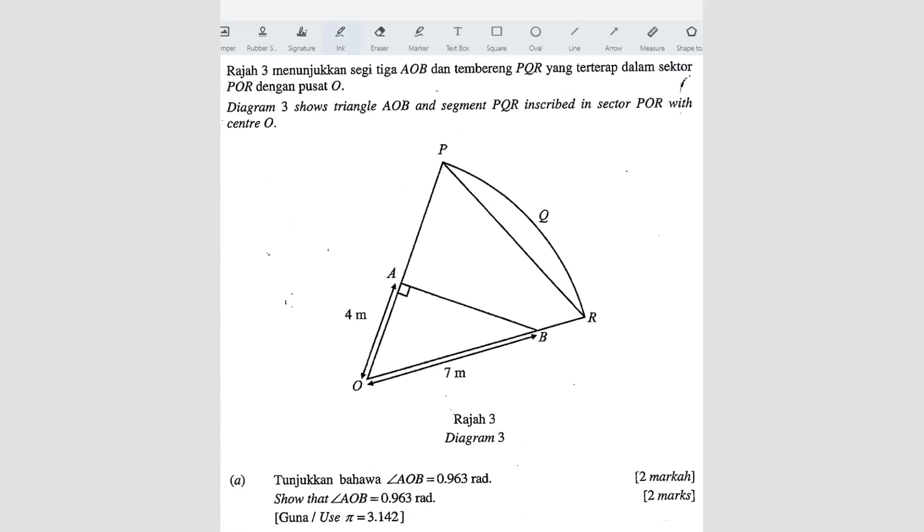So AOB is here. You want to find AOB. We can actually use this triangle because it's a right angle triangle, so we can use trigonometric ratio to solve.